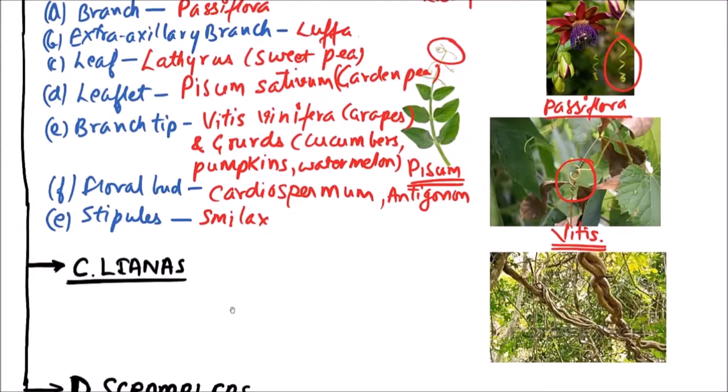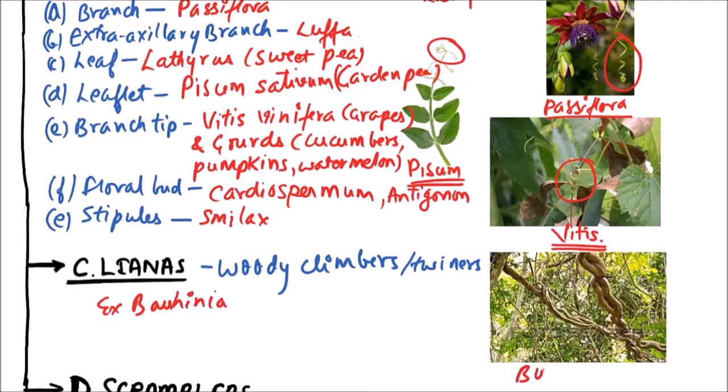Now the next type of climbers are Lianas. What are Lianas? Lianas are basically woody climbers or they may be termed as twinners also. So these are woody climbers or twinners and examples include Bohunia. We can observe Bohunia here and these are the Lianas. Lianas are common in tropical evergreen forest. Heptage.